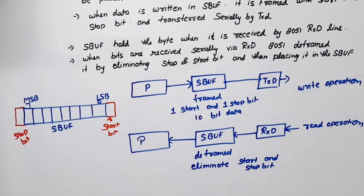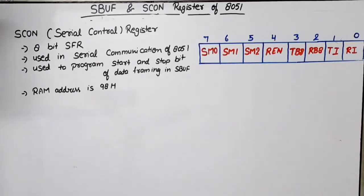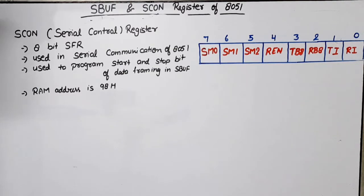Now let's look at the function and working of the Serial Control Register, SCON. SCON stands for Serial Control Register. It is used for serial communication in the 8051 and is an 8-bit special function register. It is used to program the start and stop bits of data framing. In serial communication, when data is transmitted from the processor to peripheral devices through the TXD line, the data is first stored in the serial buffer.